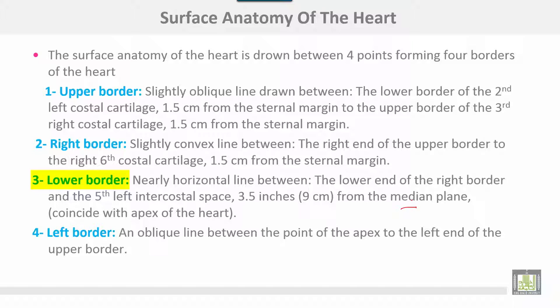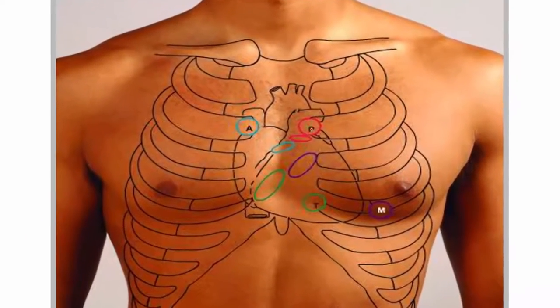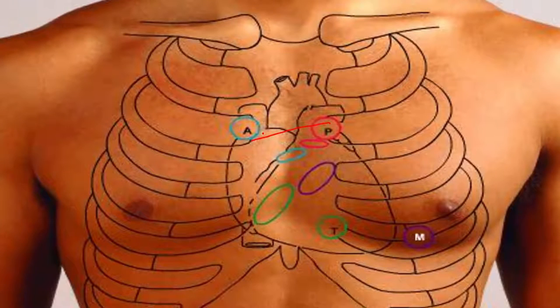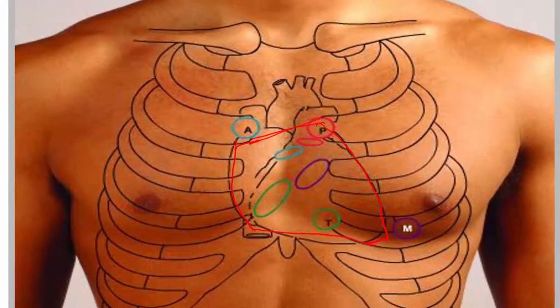This lower border point is coincident with the apex of the heart. The left border is an oblique line between the point of the apex to the left end of the upper border. The upper border runs from the second to the third costal cartilage, then to the sixth, and the left fifth intercostal space three and a half inches from the midline, coincident with the apex of the heart.